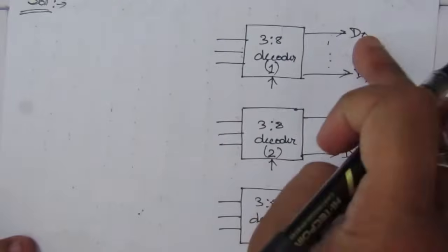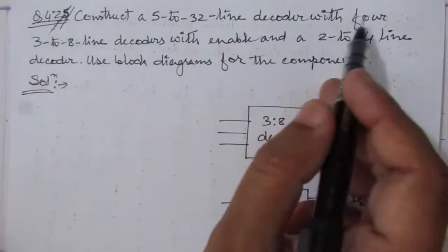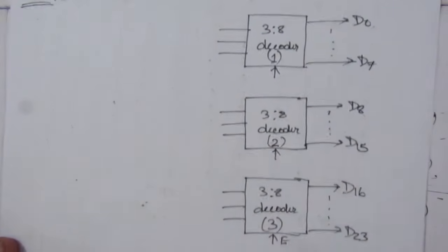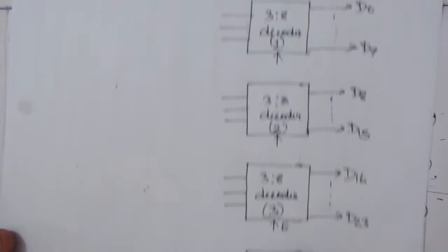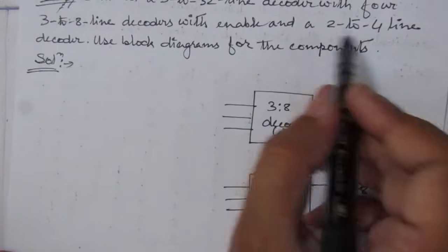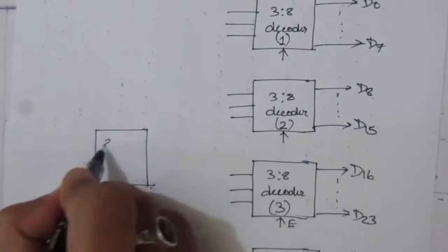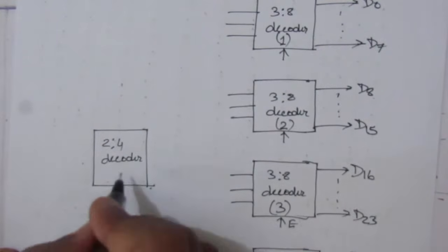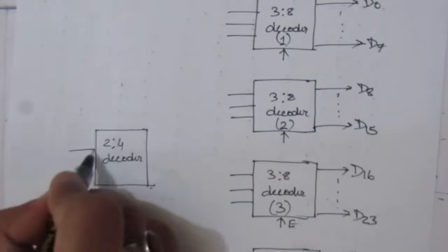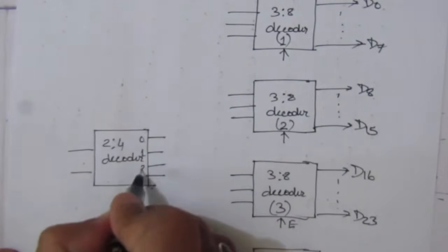So we have started from D0 to D31, giving us 32 output lines total. We have drawn all 4 three-to-8 line decoders. Now we draw the 2-to-4 line decoder, which has 2 input lines and 4 output lines labeled 0, 1, 2, and 3. We also need to include its enable line.